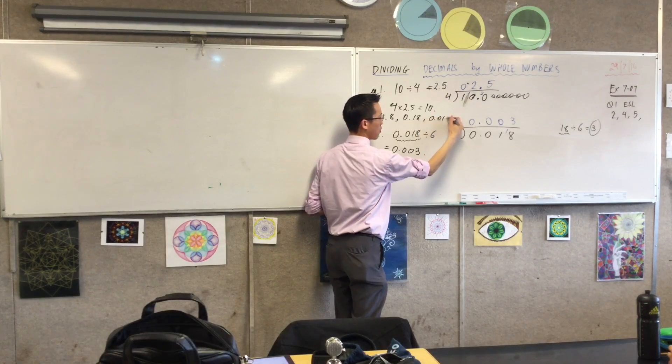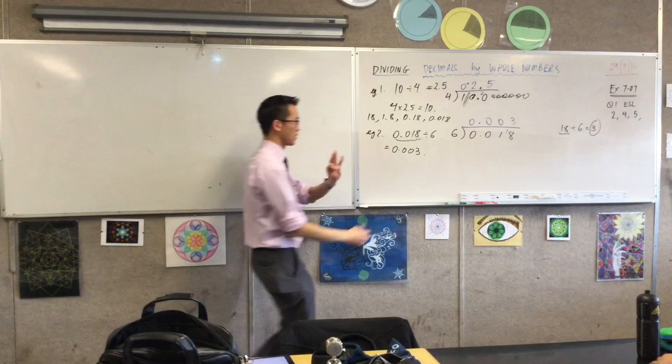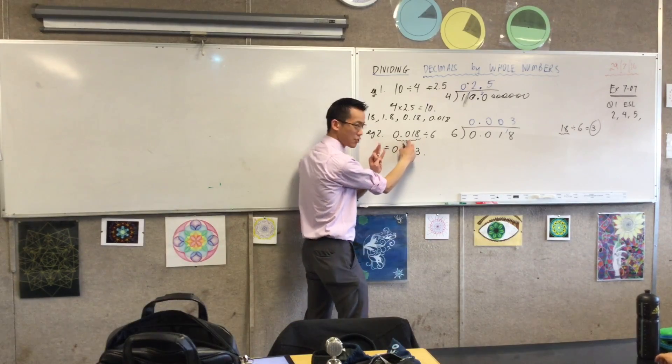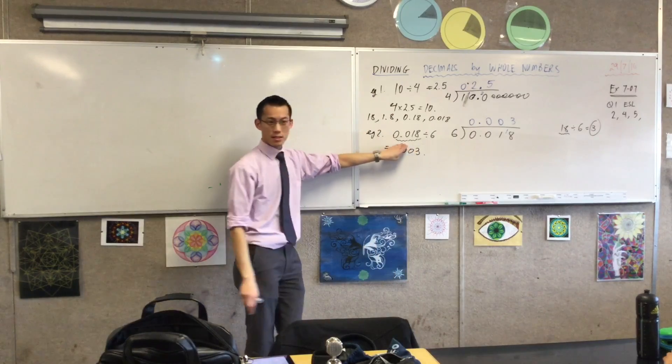So how many times did I divide by 10? Three times. Three times. So 10, 100, 1,000. This is 1,000 times bigger than this. Right?